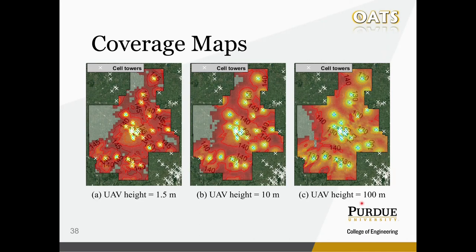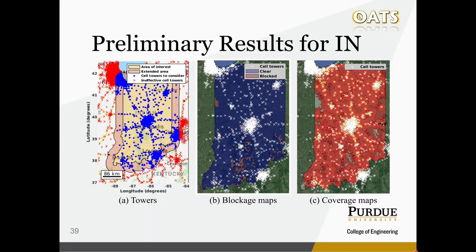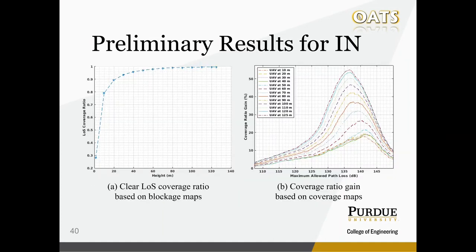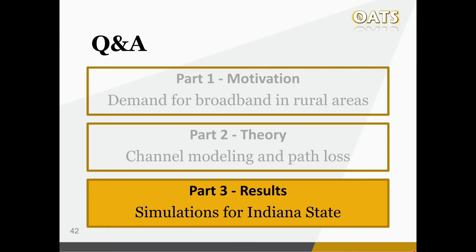We have published these results in an IEEE paper, but after that we were able to carry out the simulation for the whole Indiana State, where we observed similar results. For Indiana State, the most significant line-of-sight clearance boost can be obtained by increasing the relay UAV from 1.5 meters to 10 meters, and the data relay benefits the OK region the most. Our main contribution in this work is the upper bound for the system-level coverage gain, based on real-life data for large geographic areas.